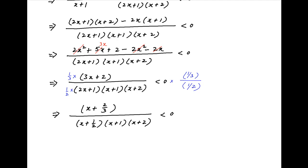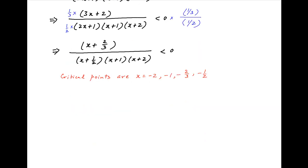Now let's evaluate the expression on the left-hand side along the number line. The critical points are x equals minus 2, minus 1, minus 2/3, and minus 1/2.